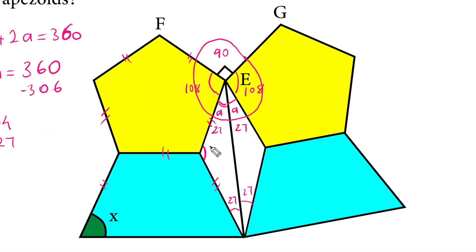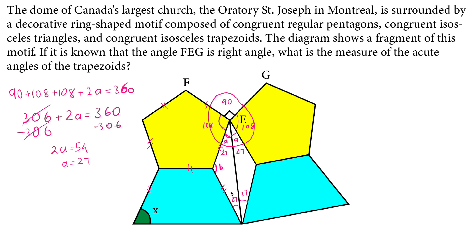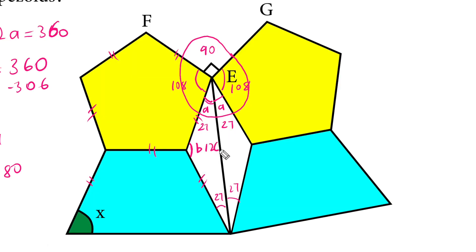If I call this angle B, the sum of all angles is 27, 27, and B. So B plus 27 plus 27 equals 180. And B plus 54 equals 180. Subtract 54 from both sides. B will be equal to 126 degrees.